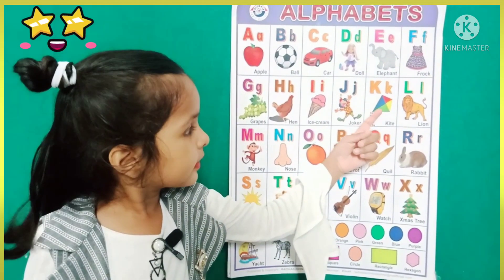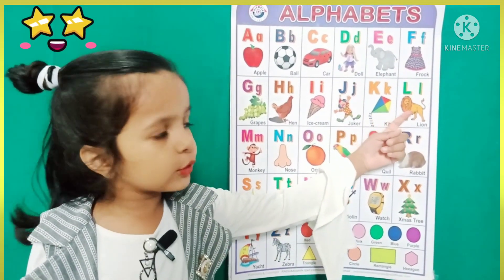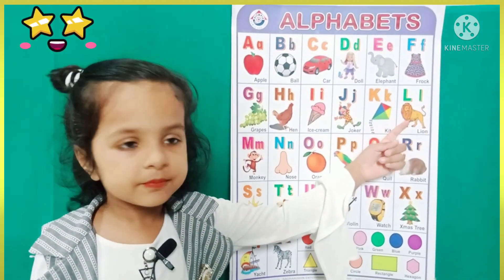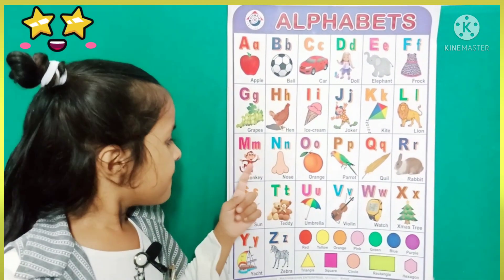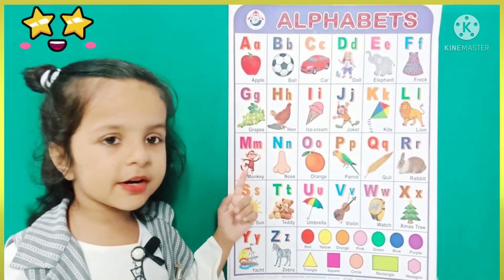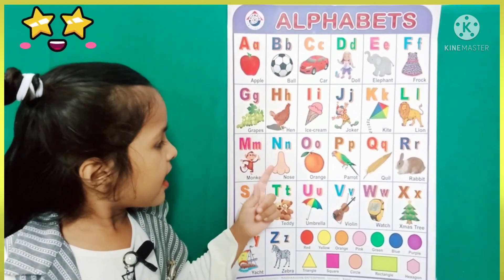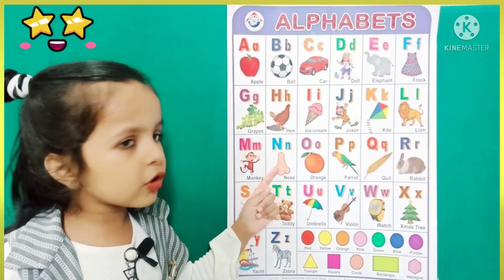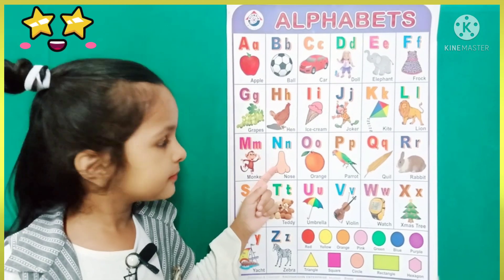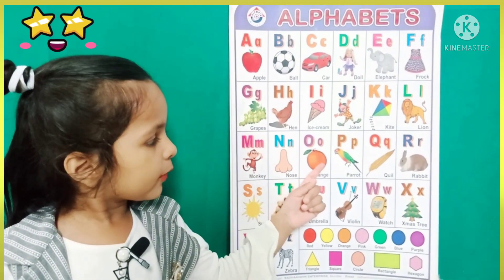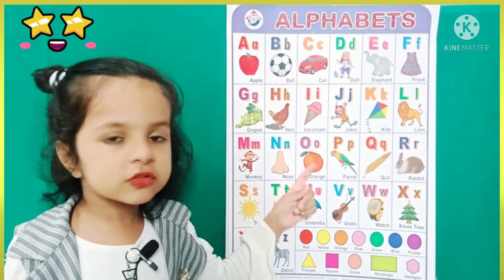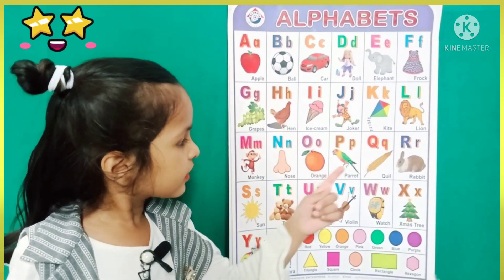K for kite, L for loin, N for monkey, N for nose, O for orange.